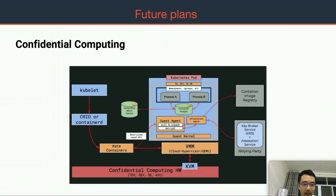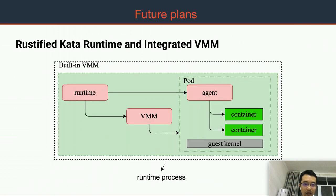Let's take a look at the confidential computing use case. This will use Kata Containers as a key component to run a trusted domain VMM or SEV-VM for workloads, so that processes on the host cannot see the memory or data of the workloads in the guest. With the Rustified Kata runtime and integrated VMM, we are building them into a single process — so in the future we will have the Kata runtime, the hypervisor, the guest, and the agent all running in the same process on the host.